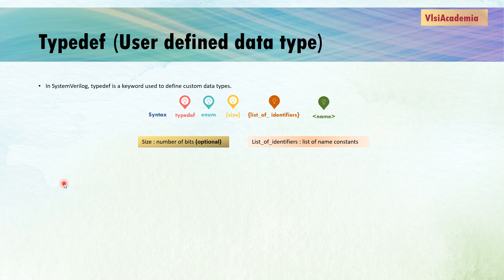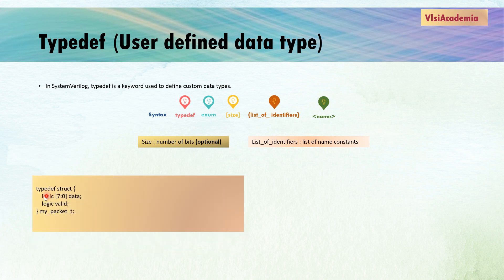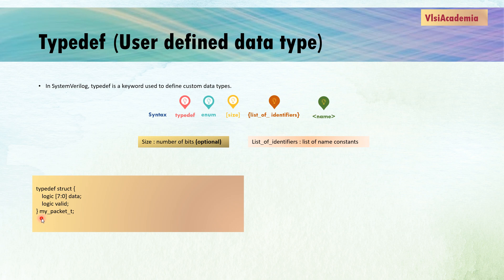In the first example, typedef is used to create an alias for a struct. Inside this struct, we combine two data types: 'data' of bit width eight and 'valid' of bit width one. These two are clubbed together using struct, and a data type called 'my_packet_t' is created using typedef. This my_packet_t data type can then be used to create multiple variables throughout your code.